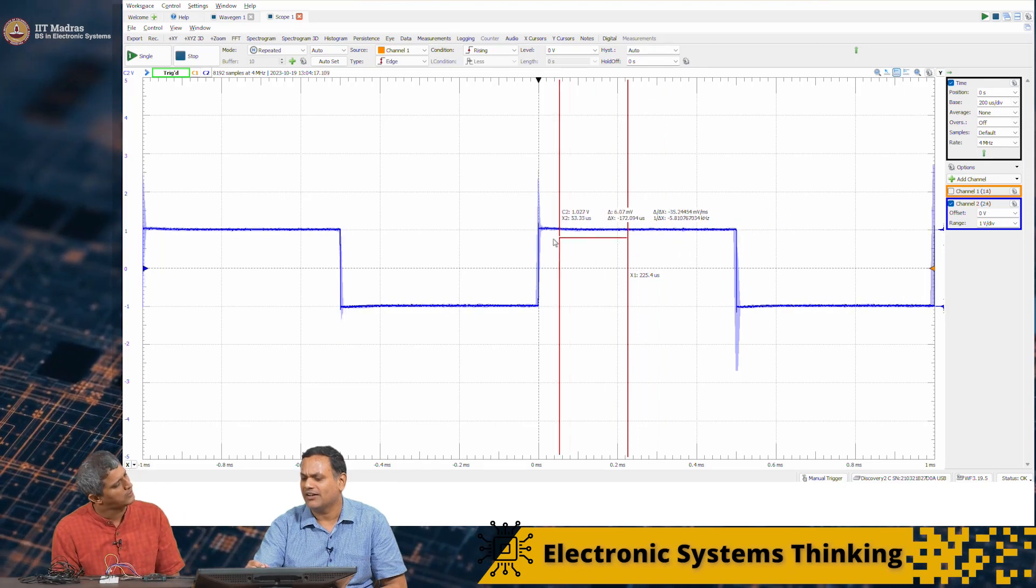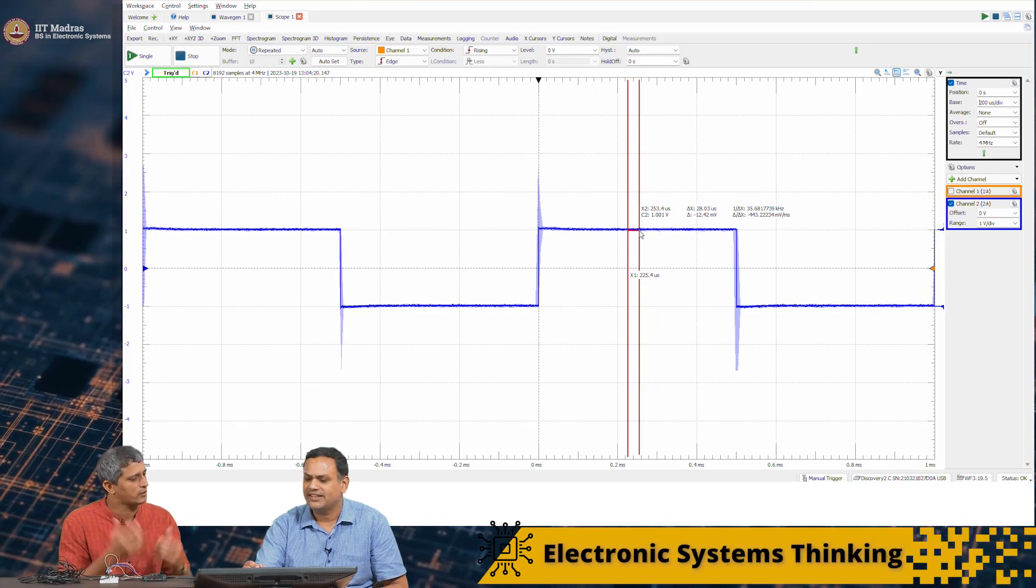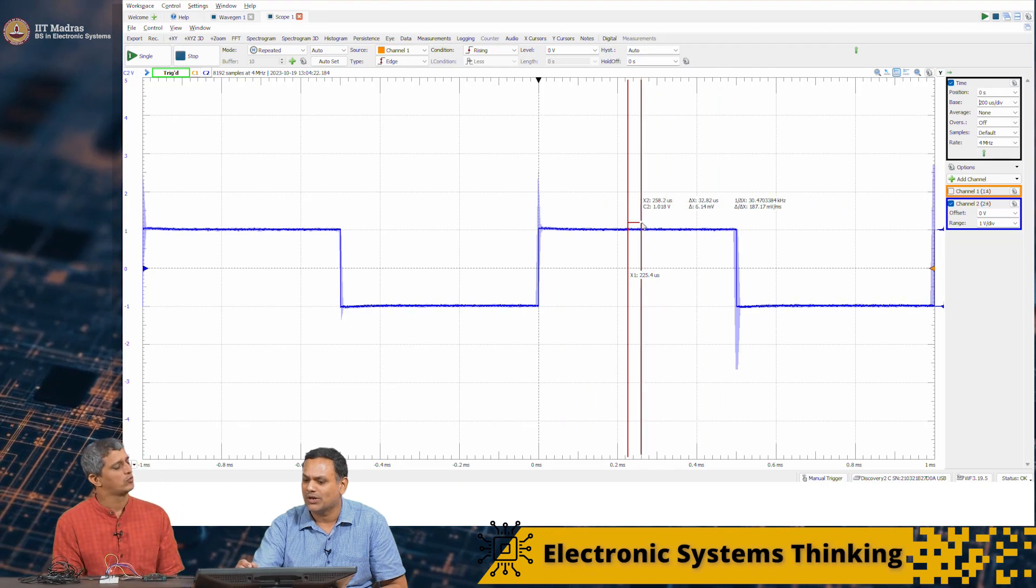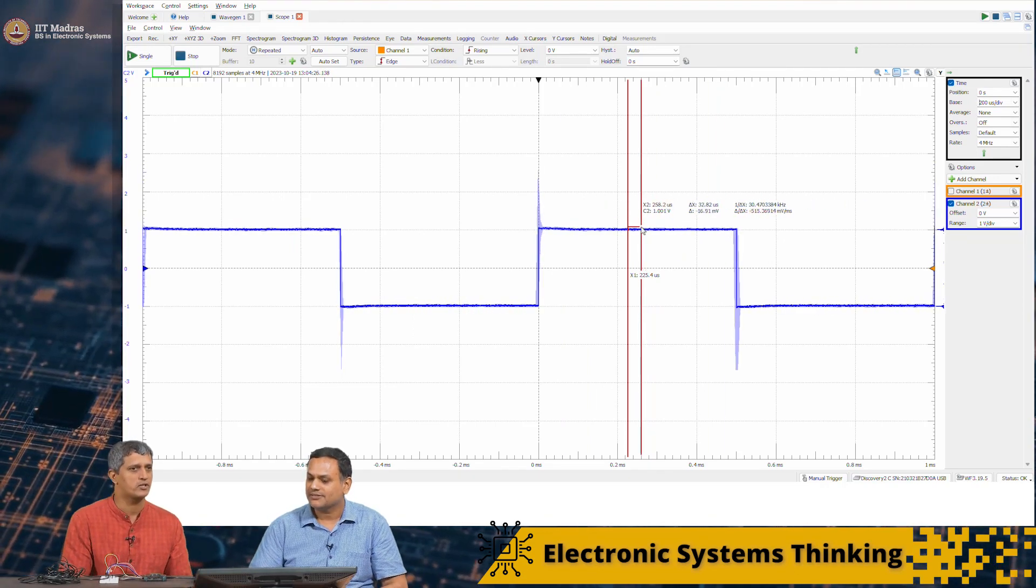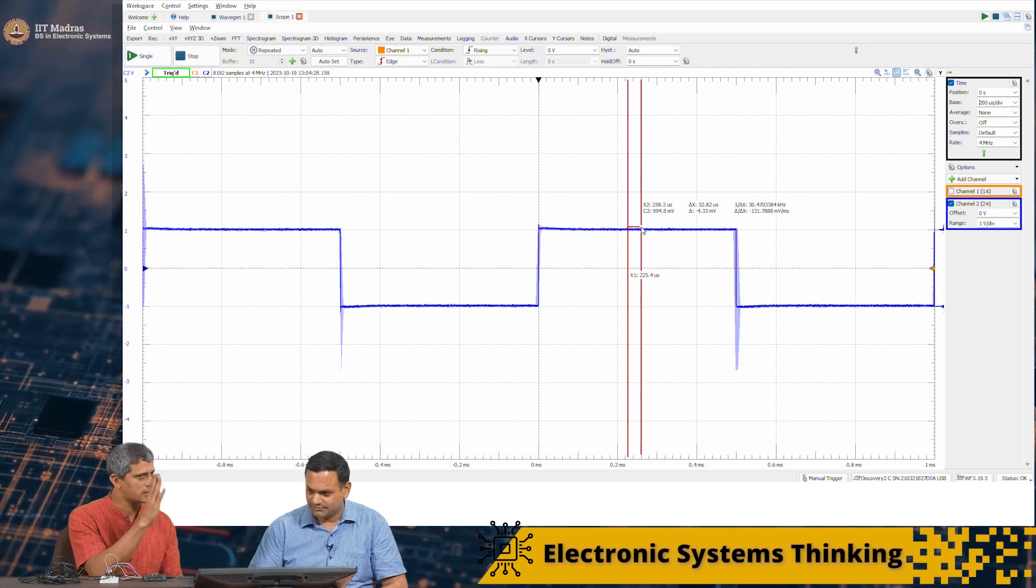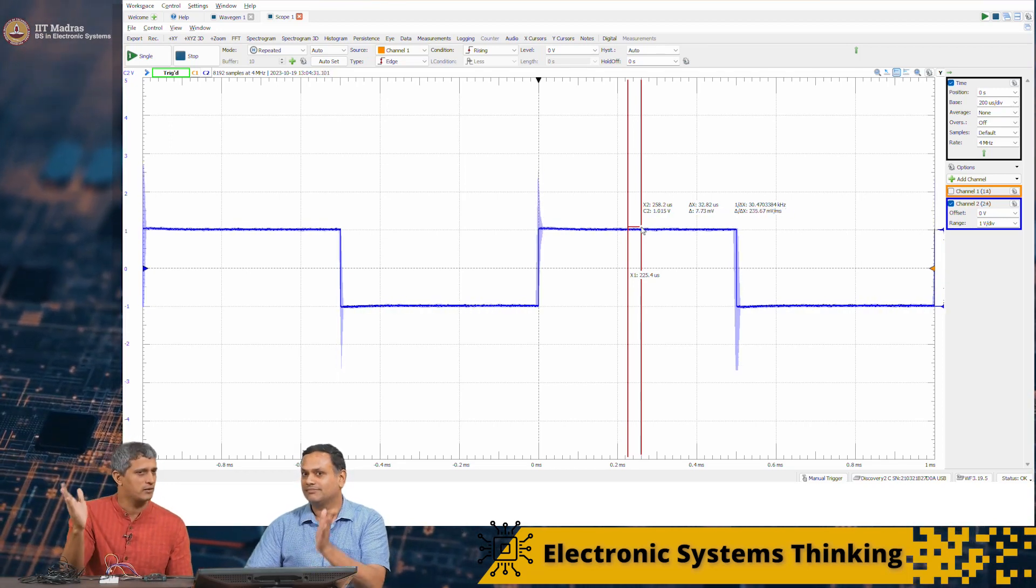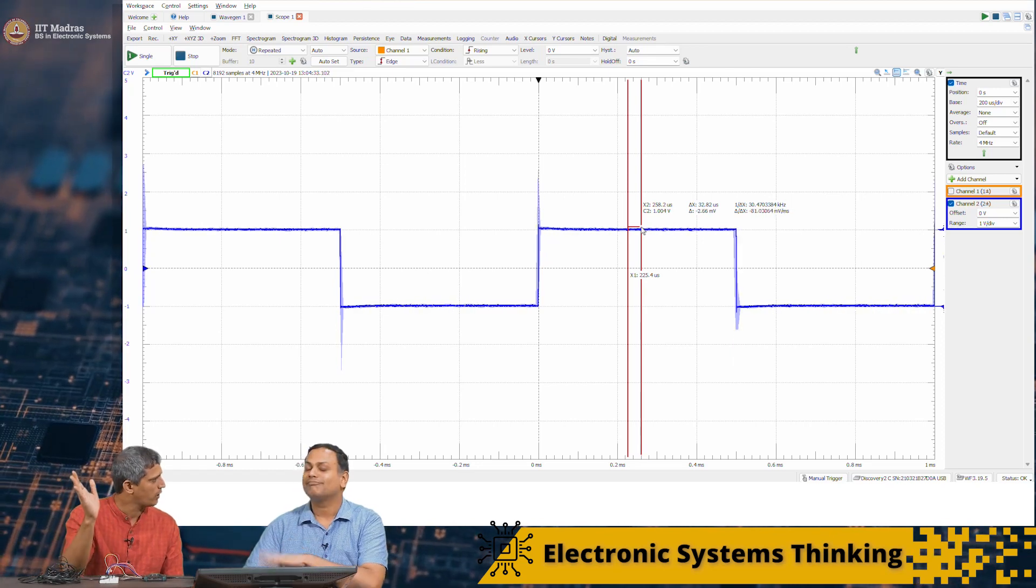You are saying somewhere mostly at T by 2 or slightly in the center. So that is where we sample and now that is an analog voltage. If that is greater than some VDD by 2, we say it is logic 1.